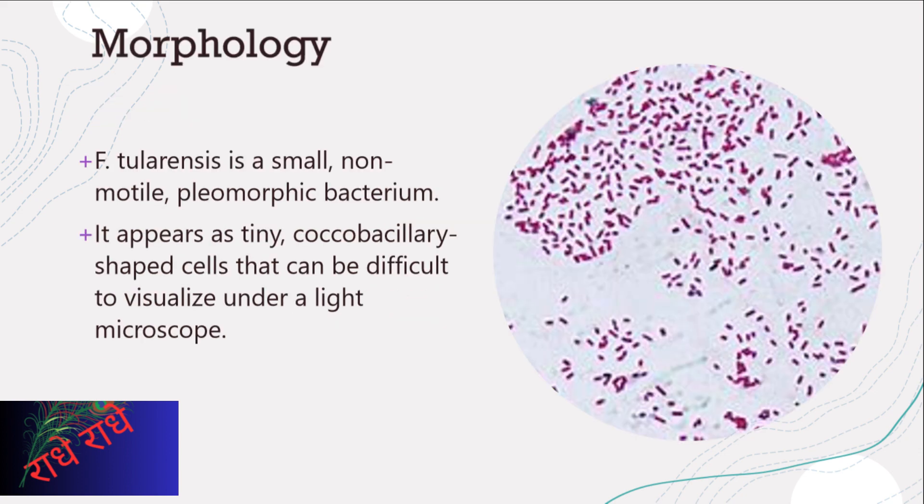Francisella tularensis is a small, non-motile, pleomorphic bacterium that appears as tiny coccobacillary-shaped cells. It can be difficult to visualize under a light microscope, which can make it challenging to diagnose. Specialized laboratory tests may be necessary to accurately identify the bacterium.